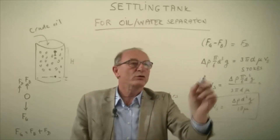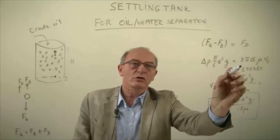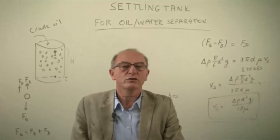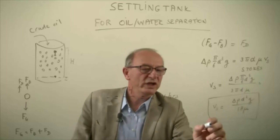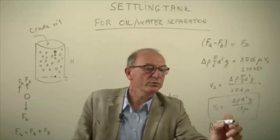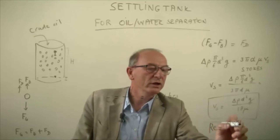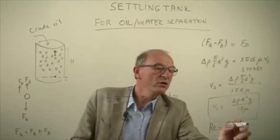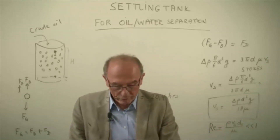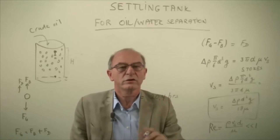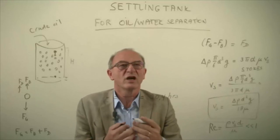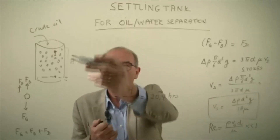What you have to check is that we assumed Stokes law — but is this allowed in this case? Are we allowed to use Stokes law? To do this we have to check the Reynolds number. The Reynolds number, which is the density multiplied by the settling velocity and the diameter, should be much smaller than 1. If you substitute these values you get a Reynolds number which is far lower, so in this case it is allowed to apply Stokes law. This is an example of how you can calculate how long it takes for the settling.